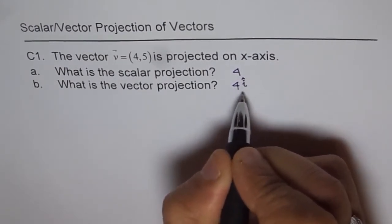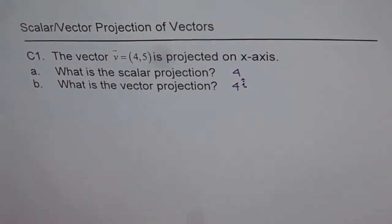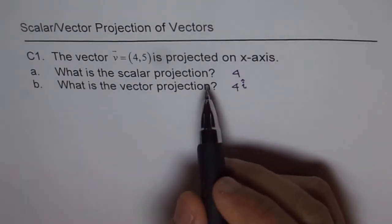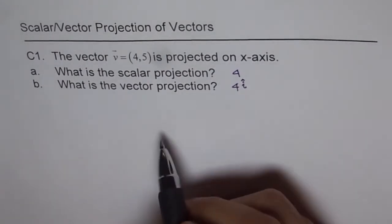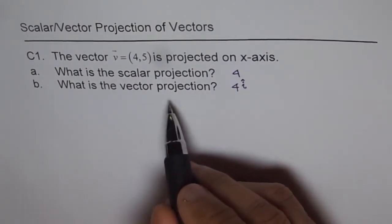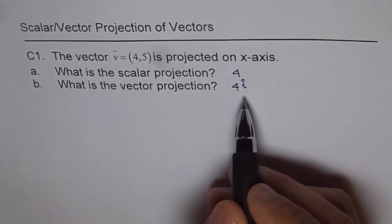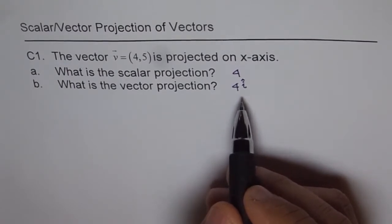That is kind of a major difference between scalar and vector projection. A scalar projection is just a magnitude and vector projection as the name suggests includes the direction.